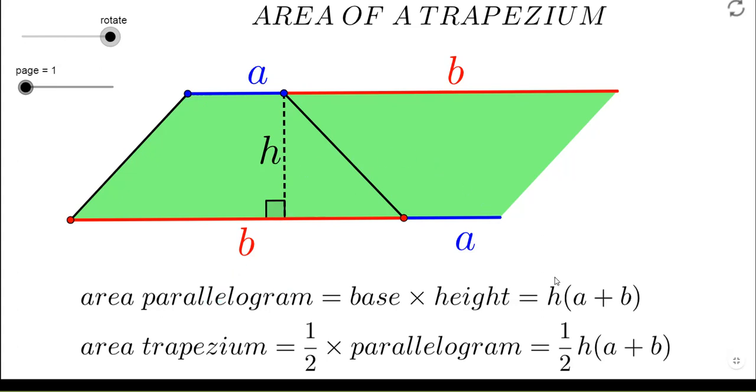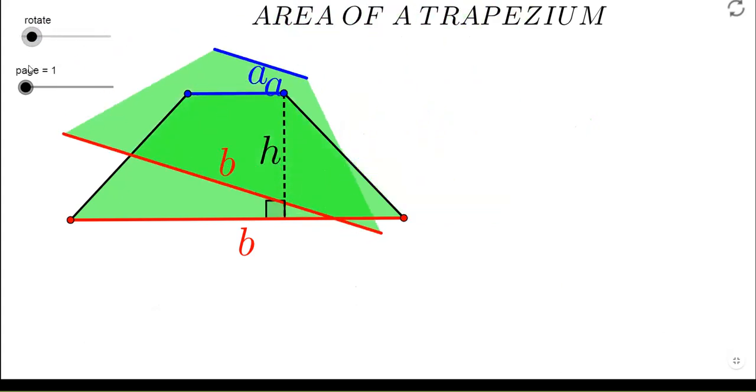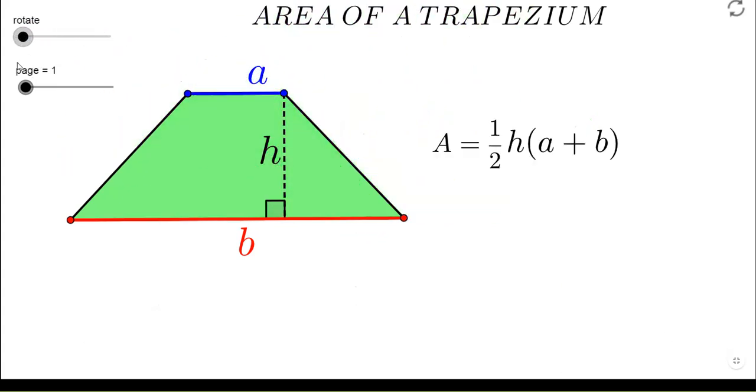Now our objective was to take out the area of a single trapezium, so what will we do? That area of the parallelogram gets divided by two. So the formula for area of a trapezium is half h into sum of the parallel sides.